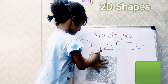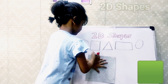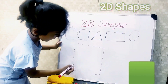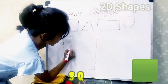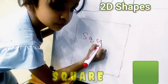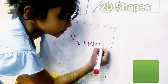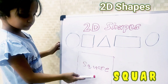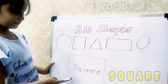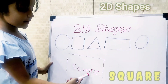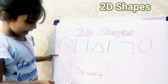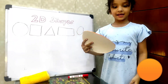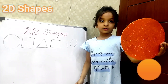Let's draw a square. This is a square. S-Q-U-A-R-E. Repeat with me: S-Q-U-A-R-E. S-Q-U-A-R-E. Again: S-Q-U-A-R-E. Square! A circle is made of a curved line.